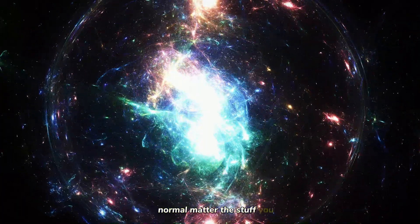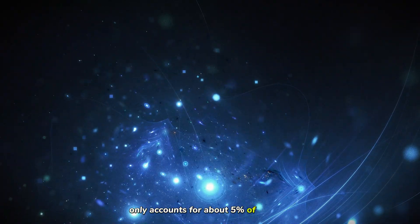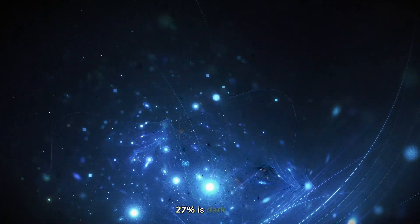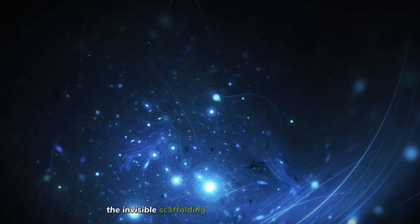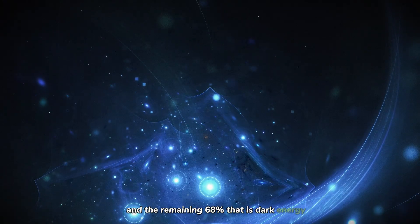Our universe is made of three things. Normal matter, the stuff you, me, the Earth, and the stars are made of, only accounts for about 5% of everything. 27% is dark matter, the invisible scaffolding that holds galaxies together. And the remaining 68%, that is dark energy.